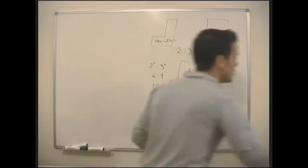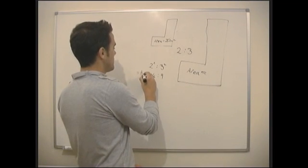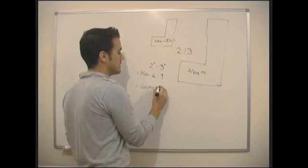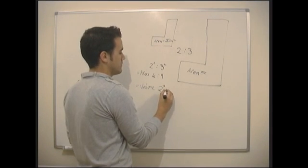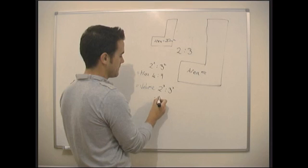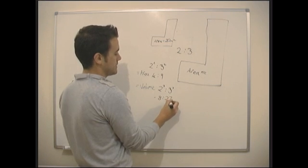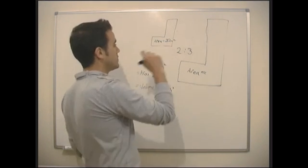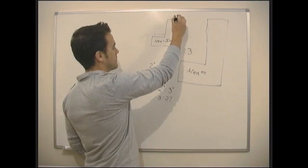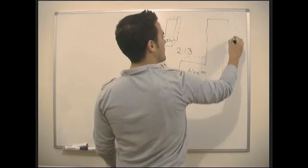What about volume? Volume is another order again, isn't it? So this is area. What about volume? Well, volume is going to be cubed, isn't it? It's going to be 2 cubed to 3 cubed. Well, 2 cubed is going to be 8, and it's going to be to 27. So if I'm told the volume of this, so if this now has suddenly become something that can have a volume.